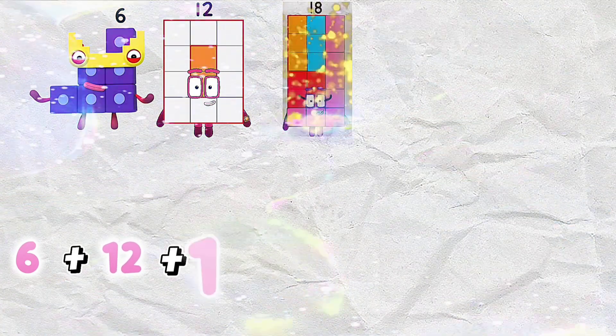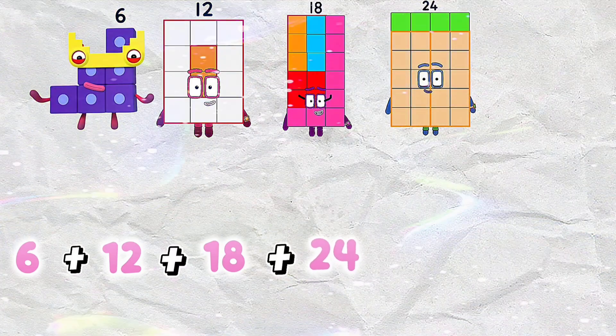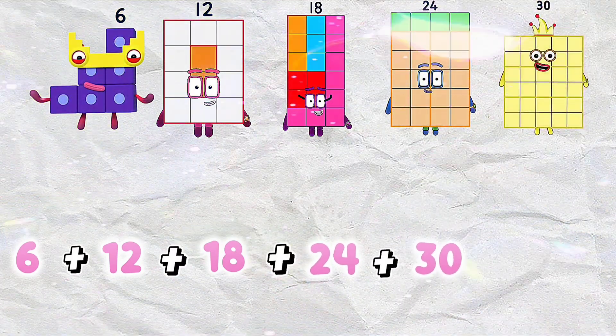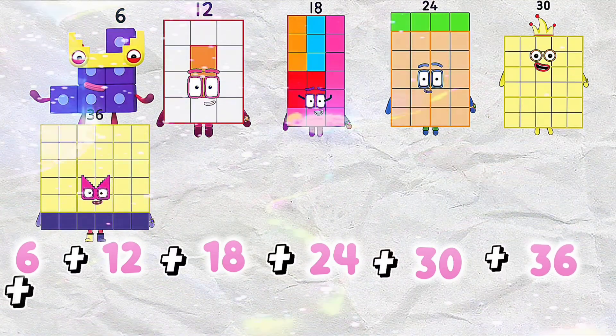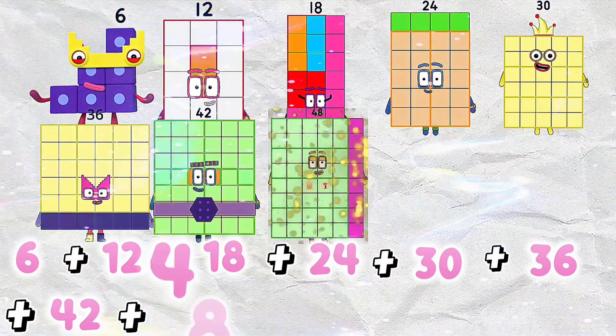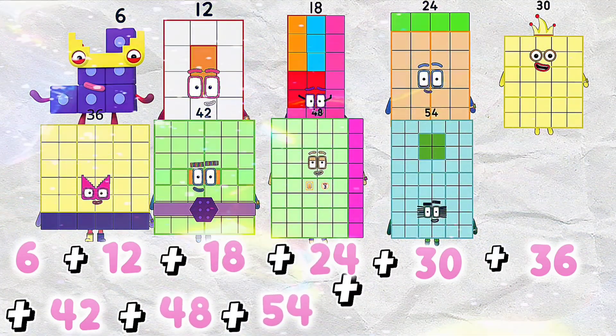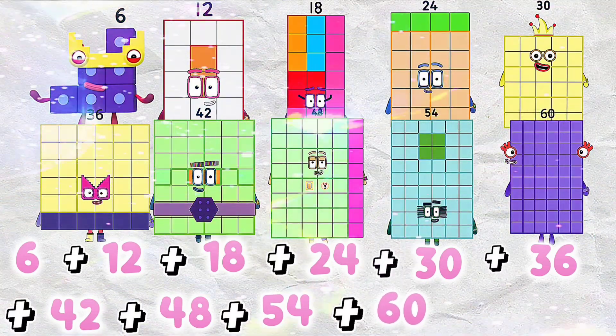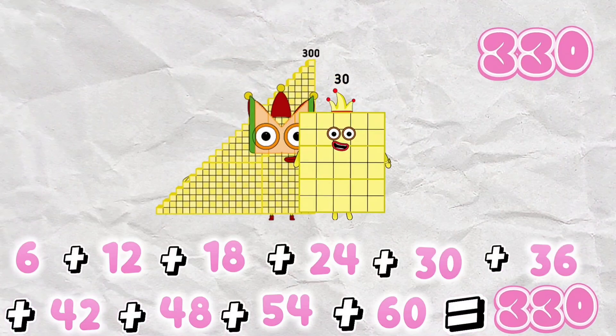6 plus 12 plus 18 plus 24 plus 30 plus 36 plus 42 plus 48 plus 54 plus 60 equals 330.